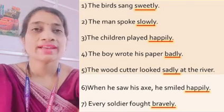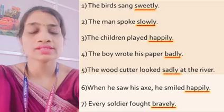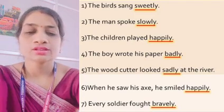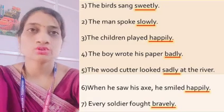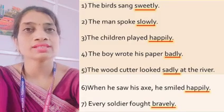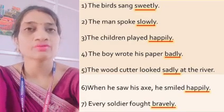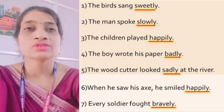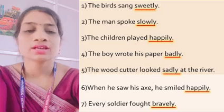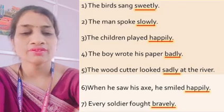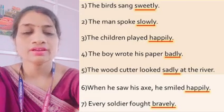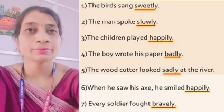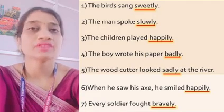When mein kaun kaun se words? Like after, before, early, now, since, soon, today, tomorrow — yeh words 'when' ki category mein aate hain, these words give the answer of 'when'. Next, 'where' means kahan — like above, below, everywhere, far, here, inside, near — inse humein answer milta hai 'where' ka, matlab koi bhi action kahan ho raha hai.